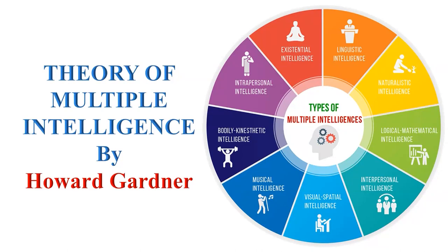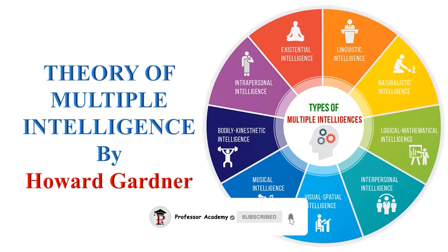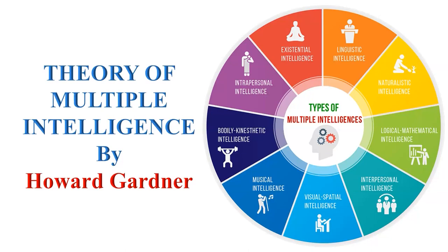Then we have interpersonal intelligence, concerned with an individual's ability to understand and relate with others. People with strong interpersonal intelligence are skilled in social interaction, communication, and empathy — teachers, counselors, and salespeople often have high interpersonal intelligence. Then there is intrapersonal intelligence, which involves self-awareness and self-understanding. People with strong intrapersonal intelligence have a deep understanding of their own emotions, motivations, and goals, and are often self-reflective.